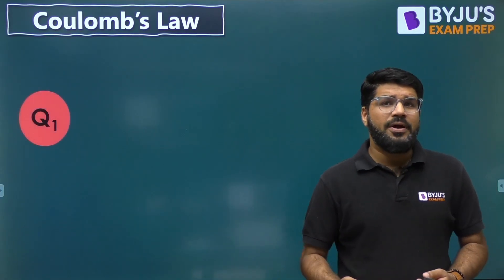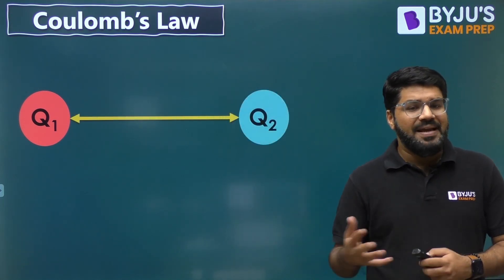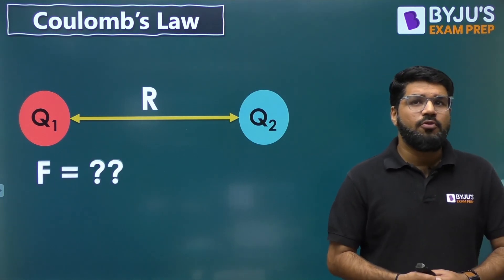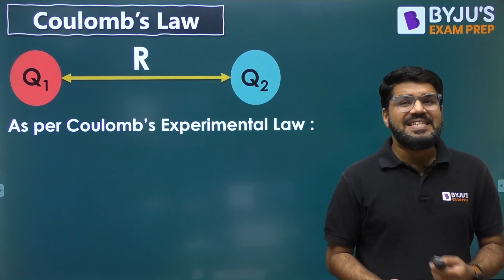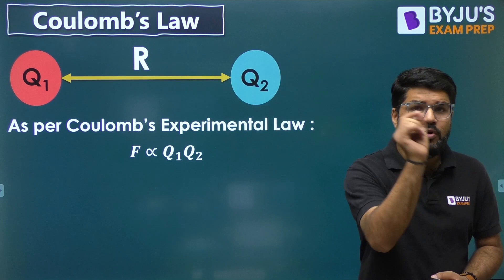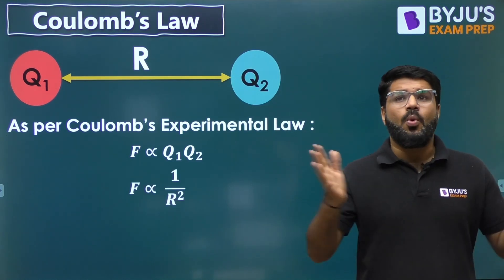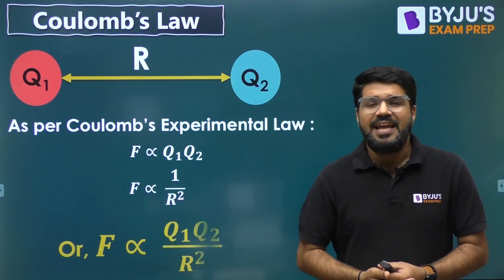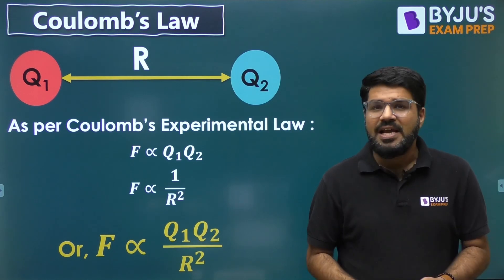Now let's say we have a point charge Q1 and another point charge Q2, and both of them are separated by a distance R. We are interested in finding what is the force of attraction or repulsion between them. As per Coulomb's experimental law, this force is proportional to the product of both the charges, Q1 times Q2. The force is also inversely proportional to the square of the distance between the two charged particles. So the force is proportional to Q1 Q2 divided by R squared.